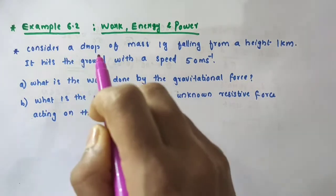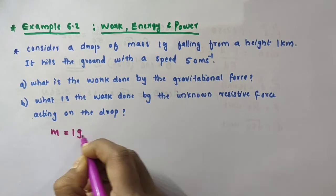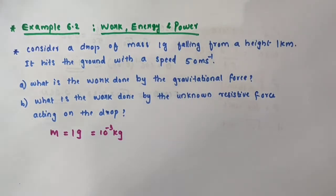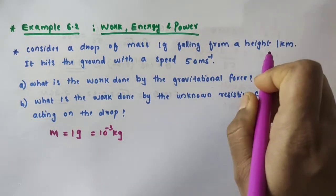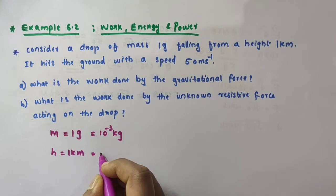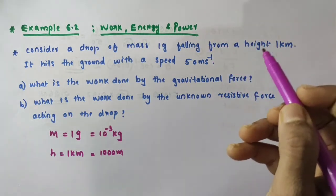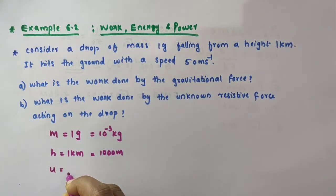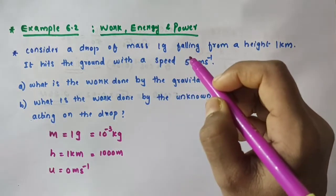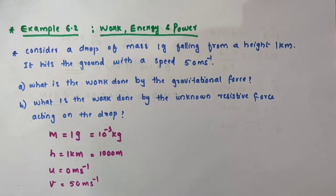It is given that the raindrop has mass m equal to 1 gram. Since gram is not the SI unit, we convert: 1 gram equals 10 raise to minus 3 kilograms. The height H equals 1 kilometer, which in SI units is 1000 meters. Since it is falling from a height of 1 kilometer, we take its initial velocity U as 0 meters per second. It hits the ground with a speed of 50 meters per second, so the final velocity V equals 50 meters per second.